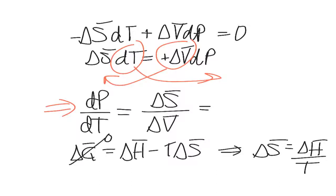That means, plugging this in, we get delta H molar over T delta V molar. And this is the Clapeyron equation.